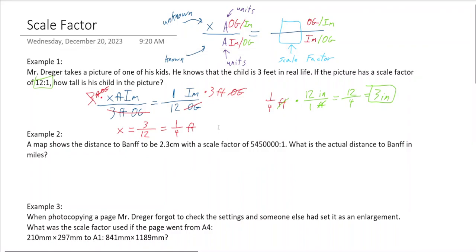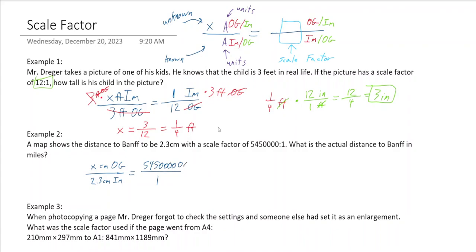2.3 centimeters is the image — it's on the map — which means we're looking for the original. If you start with centimeters you'll end up with centimeters when you calculate. The scale factor is something to one. Which is bigger? The original distance is obviously bigger, so the original is the large value and the image is the small value.